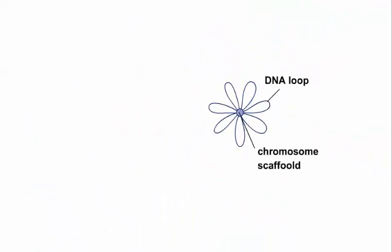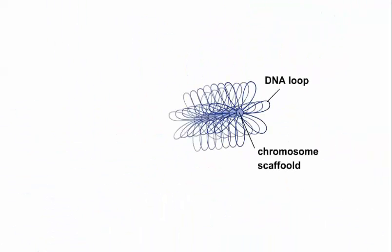To produce a highly condensed mitotic chromosome, the 30 nanometer fiber must be compacted into yet higher order structures. The 30 nanometer fiber is believed to fold into large loops, held together by nuclear scaffold proteins at the base of each loop. The looped fiber can then be coiled again to produce the fully condensed chromosome.